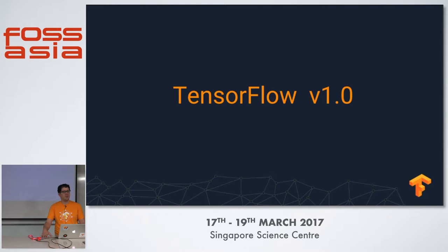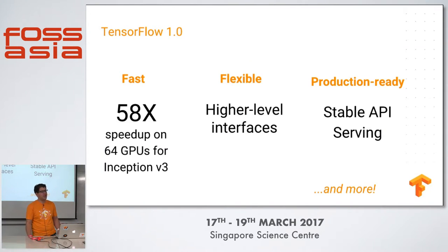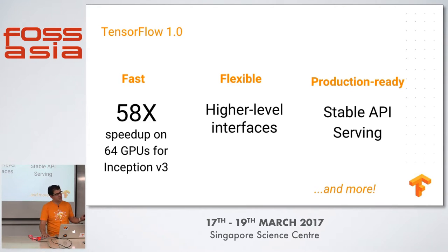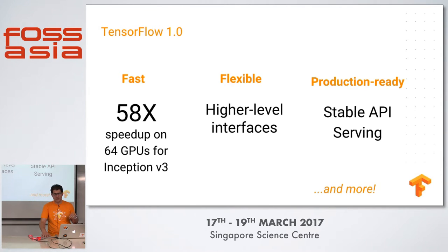So let me talk about the features in TensorFlow 1.0. We've made it a lot faster — we've looked at the most commonly used models and achieved a 58x speedup on 64 GPUs for Inception v3, which is near-linear scaling. We've also worked to make the APIs much more flexible, specifically adding higher-level interfaces that make it much easier to start using TensorFlow. Lastly, we've worked to make TensorFlow more production ready, stabilizing the API and ensuring some backward compatibility in the Python API.